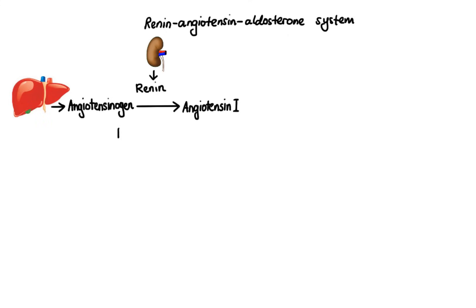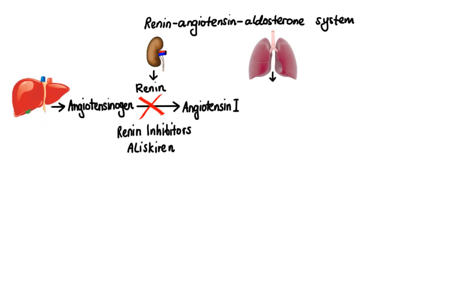So renin is the target of renin inhibitors, which selectively inhibit this enzyme, thus decreasing production of angiotensin-2. The example of a drug that belongs to this class is aliskiren. Secondly, we have angiotensin-converting enzyme, which is responsible for conversion of angiotensin-1 to angiotensin-2, and this enzyme is the target of ACE inhibitors.